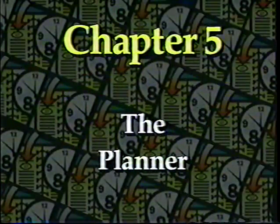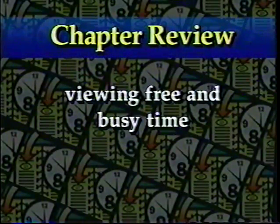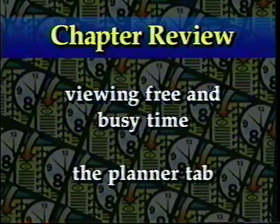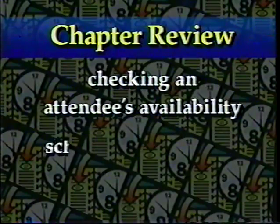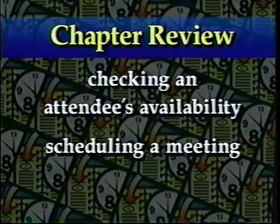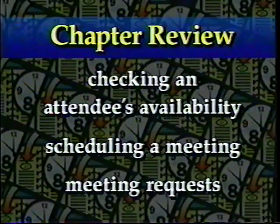In Chapter 5, we learned how to view a person's free and busy time in the Planner tab. We learned how to check an attendee's availability in the Attendees box. We learned how to schedule a meeting using the Meeting Wizard. And we learned how to send out a meeting request.